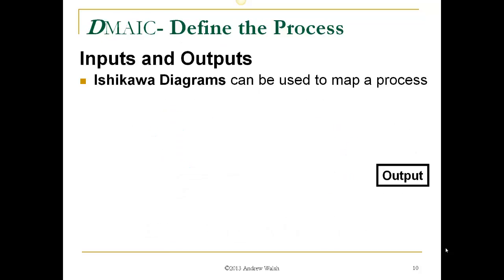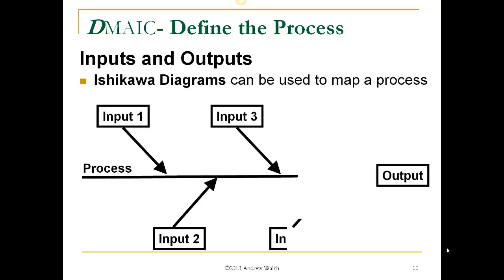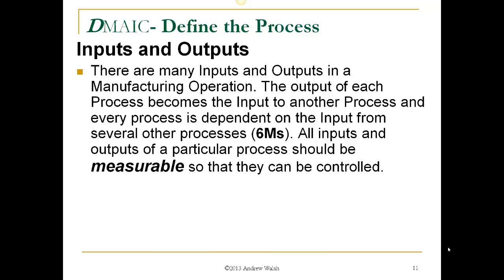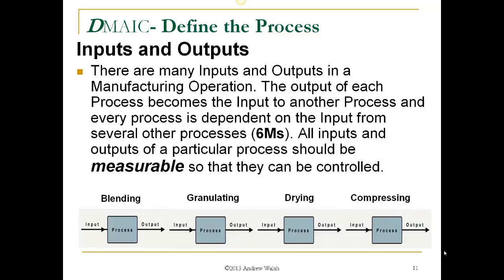One way to map a process and look at the outputs is to use Ishikawa diagrams, also known as fishbone diagrams. An input, input 2, input 3, and input 4 create the characteristic fishbone structure, and each one of those inputs along the process can be evaluated for its effect on the output. There are many inputs and outputs in a manufacturing operation — the output of each process becomes the input to another. All inputs and outputs of a particular process should be measurable. For example, the output from blending becomes an input into granulation, granulation output becomes an input into drying, and drying output becomes an input into compression.